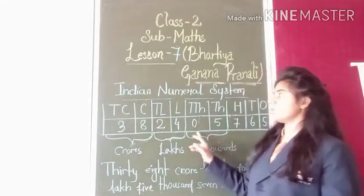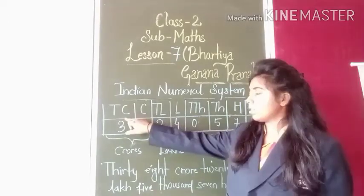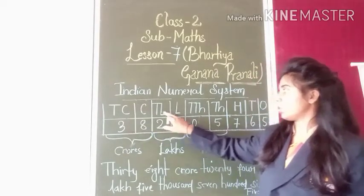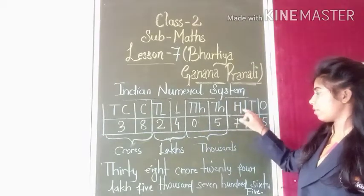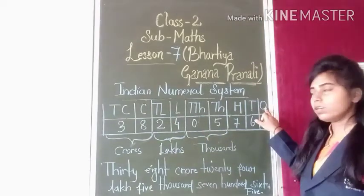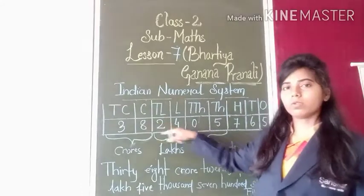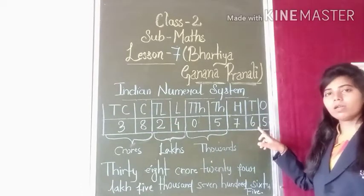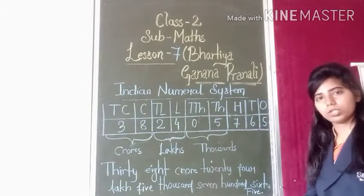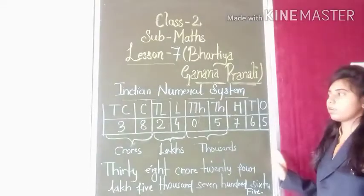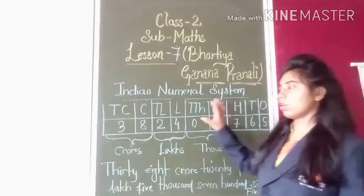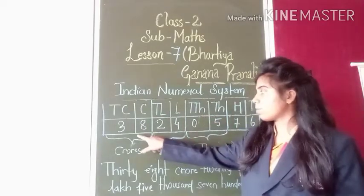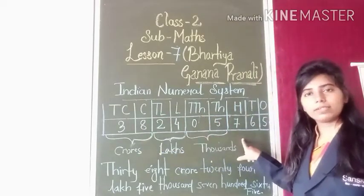I will give you some examples. How many columns are there? 1, 2, 3, 4, 5, 6, 7, 8, 9 — nine columns are there. Here we have made a new column in Bharatiya Ganana Pranali. We have arranged numbers according to their place value.